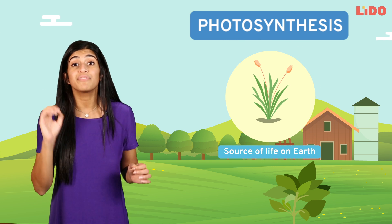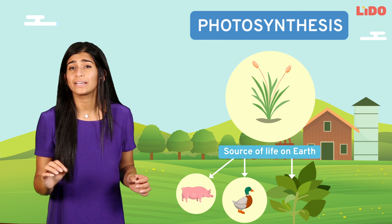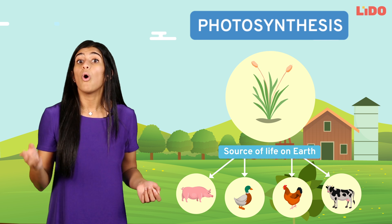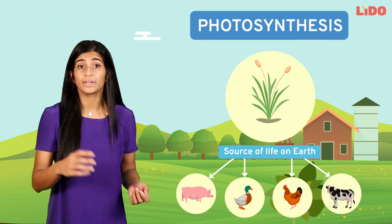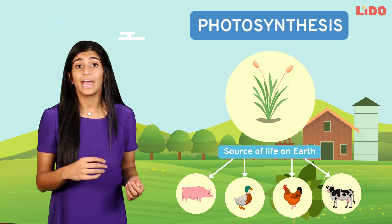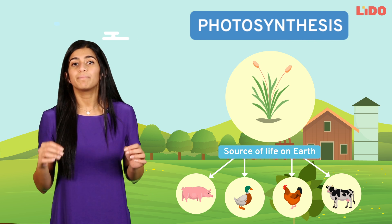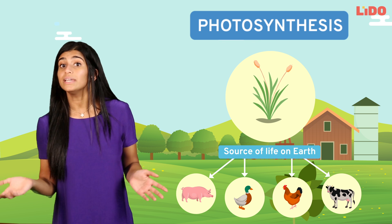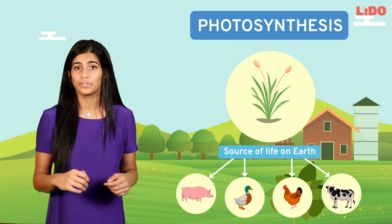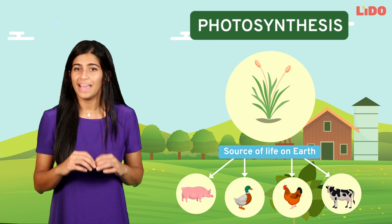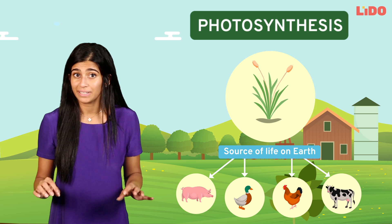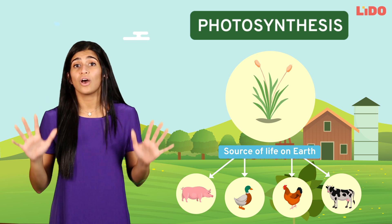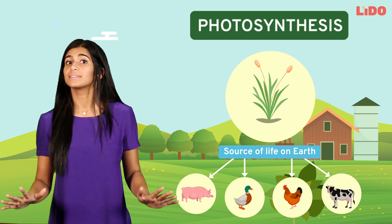Plants are the very first link of every food chain. All other organisms, being heterotrophs, depend on plants directly or indirectly for their food. Photosynthesis therefore is ultimately the source of life on earth.